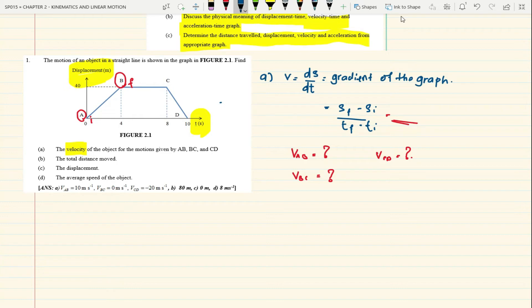Next, question B: the total distance moved. You are given displacement against time graph, so just look at how much it moves. For question B, just add the distances: distance AB plus distance BC plus distance CD. Read from the graph and add them up.